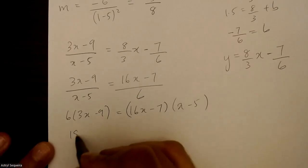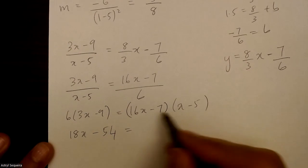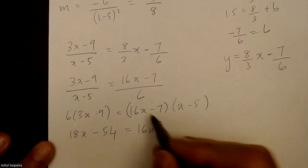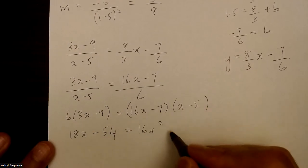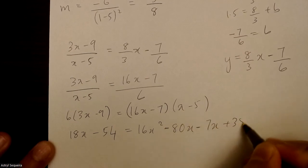So 6 times 3x minus 9 equals 16x minus 7 times x minus 5. I'll expand both sides. So 18x minus 54 equals 16x squared.